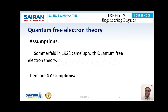The third assumption is: the energy levels in a metal are filled up with electrons in accordance with Pauli's exclusion principle. Pauli's exclusion principle states that no two electrons occupy a particular energy level with all four quantum numbers the same.